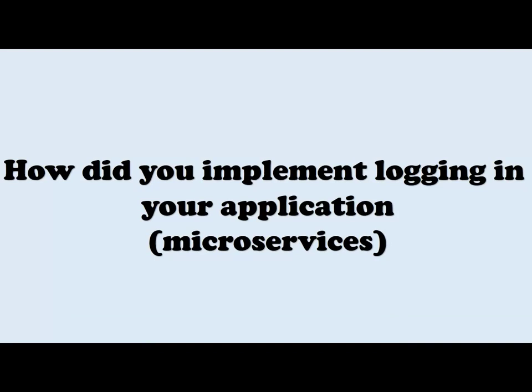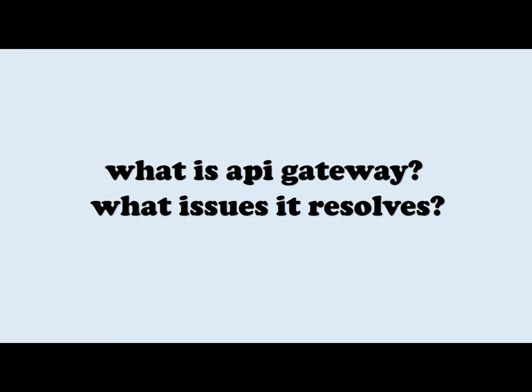There was a question on how you implement logging in your application — maybe in a microservice architecture — like how do you implement logging when there are different services running on multiple machines. The next question was: what is an API gateway and what issue does it resolve? A likely follow-up would be: what are the different ways we can implement an API gateway?